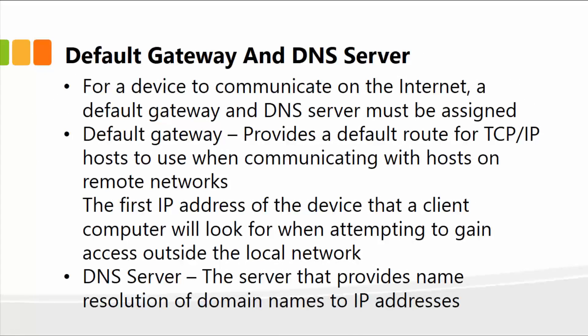Another important concept is the default gateway and DNS server. For a device to communicate on the internet, both must be assigned. Think of the default gateway as the main gate outside your house — everything within your own environment connects internally, but if you need to connect to the outside world, another city or town, you use the default gateway.